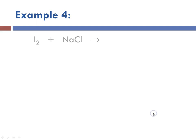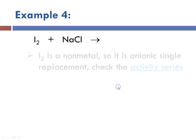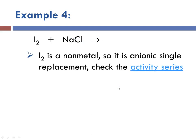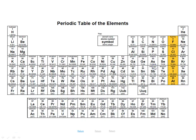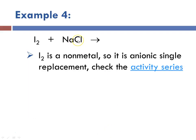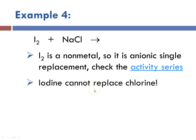Example 4: iodine plus sodium chloride. Iodine is a nonmetal, so it's anionic single replacement. We check the activity series — iodine is below chlorine in the periodic table and cannot replace chlorine. So we write no reaction.